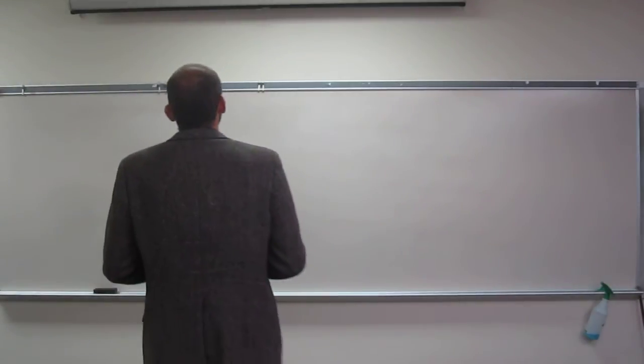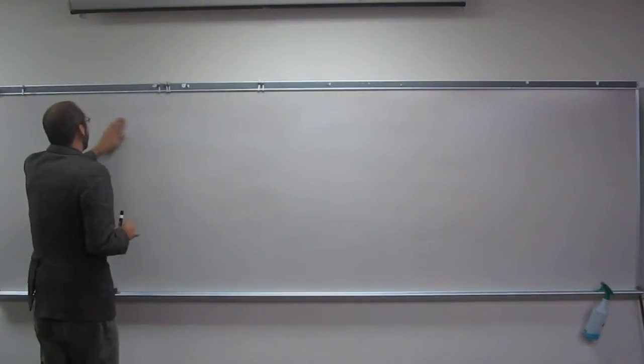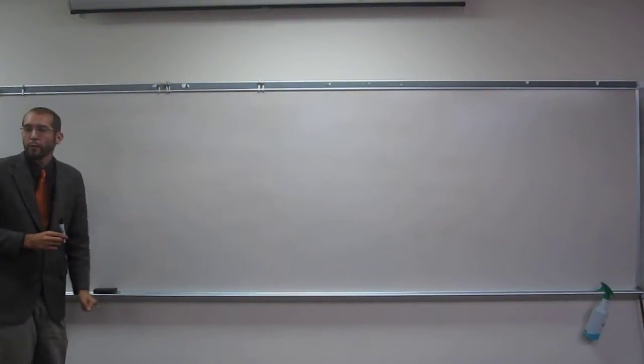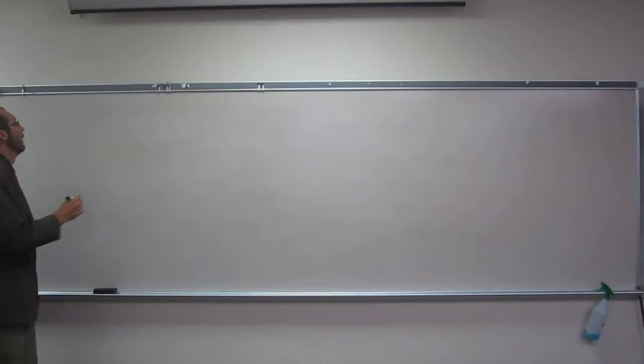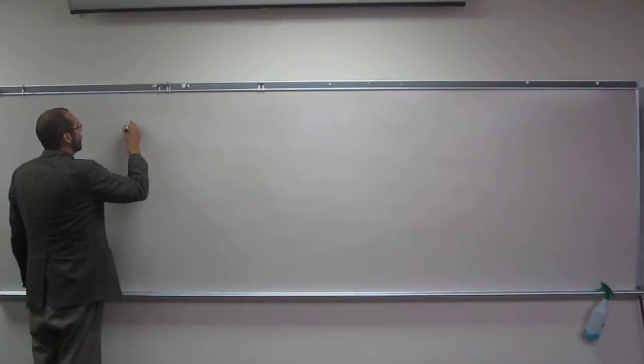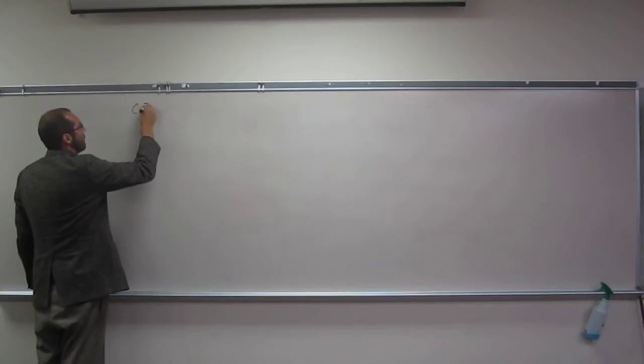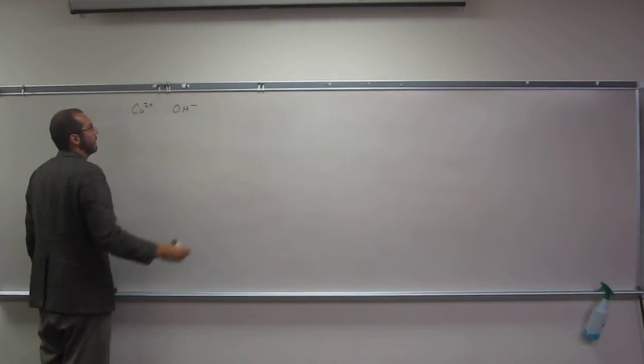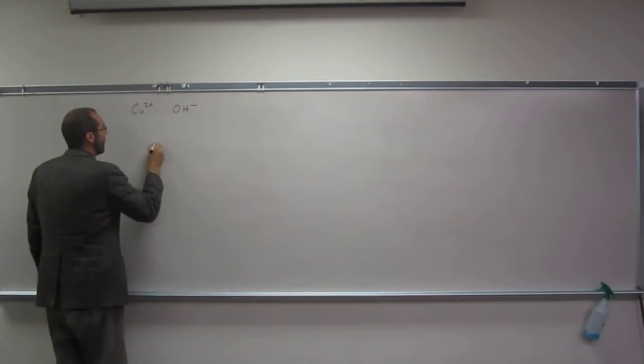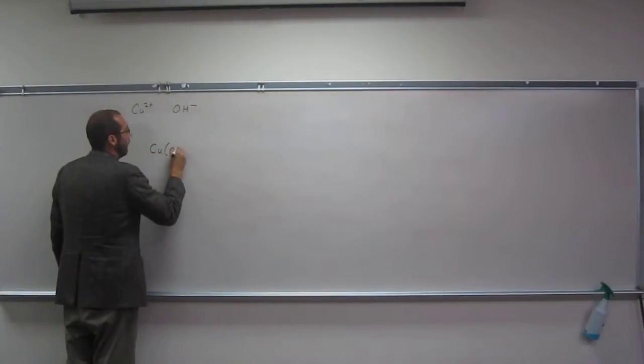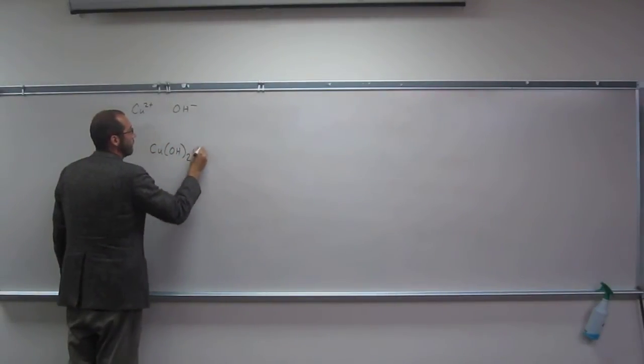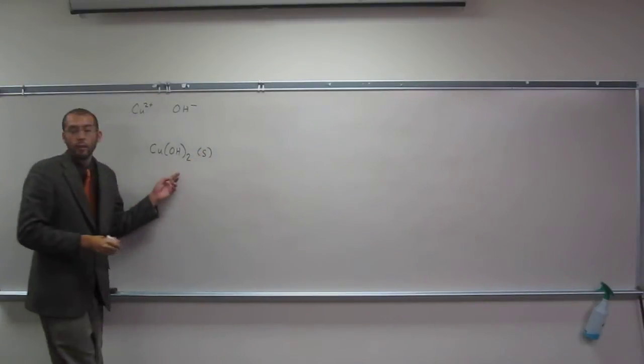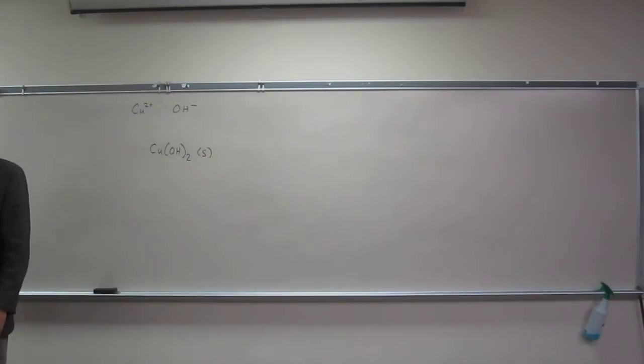In order to do this problem, you need to know what copper 2 hydroxide is. Copper 2 is Cu²⁺, and hydroxide is OH⁻. To combine those, we have Cu(OH)₂, and that's a solid. It's an insoluble or slightly soluble compound.